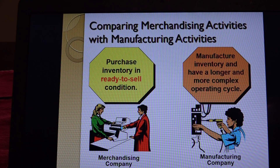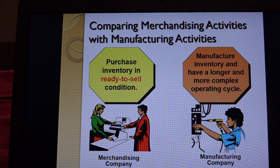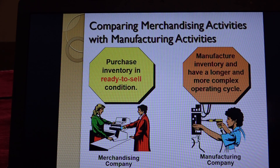Merchandising activities are different from manufacturing activities. Merchandising has as its base inventory that has been purchased from a manufacturer who actually made the product. Manufacturing activities involve different kinds of inventory - normally raw materials inventory that they turn into a product. Note that manufacturing activities may have a longer and more complex operating cycle.